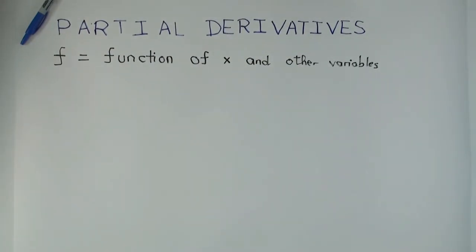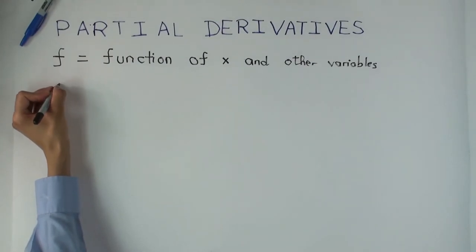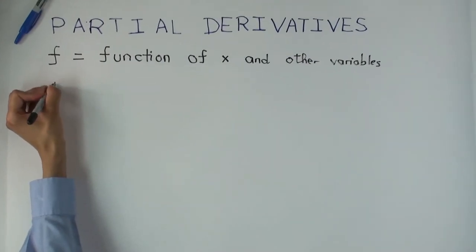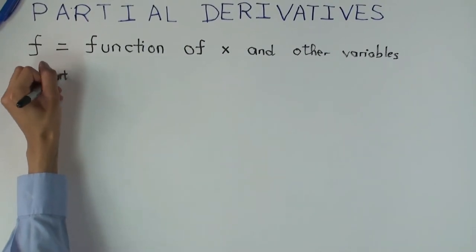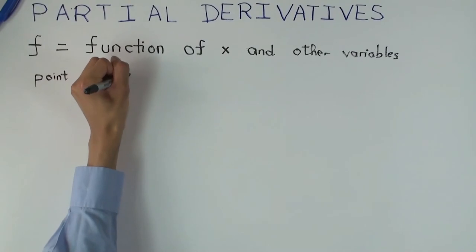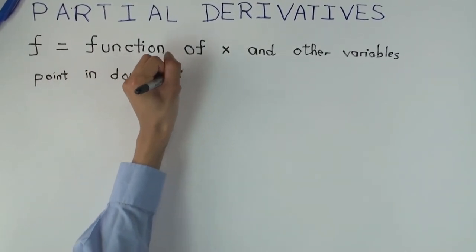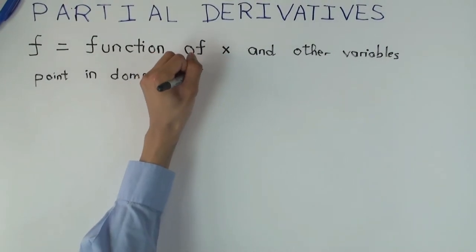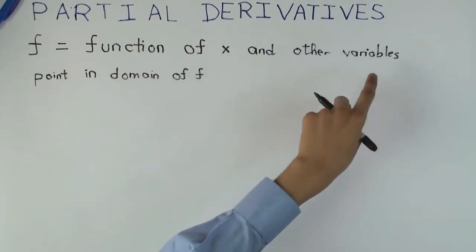We are going to start with the version of the partial derivative which is at a point. So let's say we have a point in the domain of f. To specify a point in the domain of f — a point on which you can evaluate f — you have actual numerical values of x and the other variables.